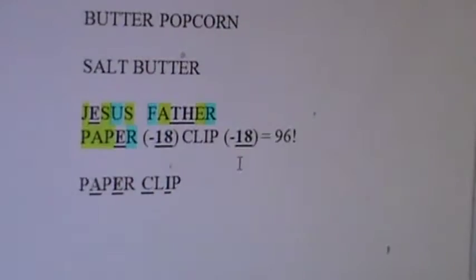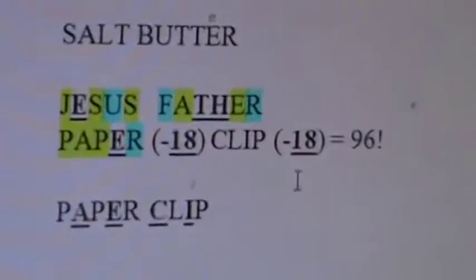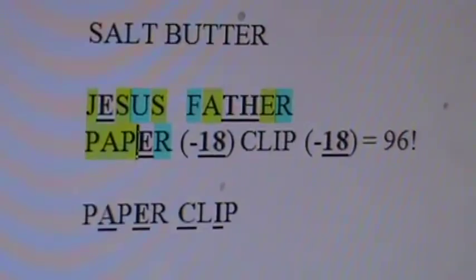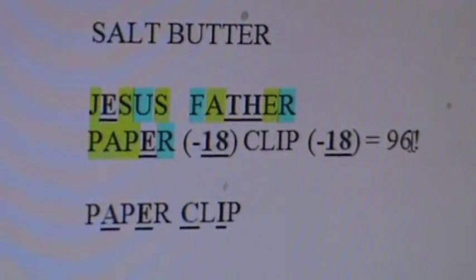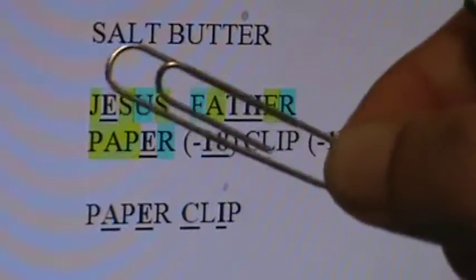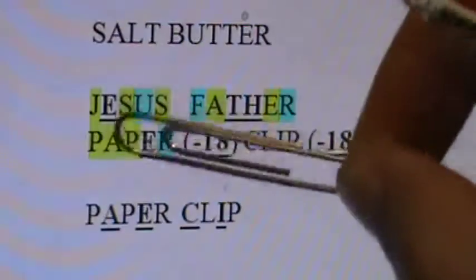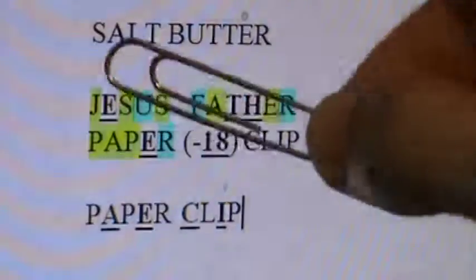But when you put the two together, it's even more obvious because paper is exactly minus 18 from Jesus and clip is exactly minus 18 from Father. So it's a very perfect, obvious pair. And that just came to me as I was in fact looking at a paperclip. And so here it is. The great paperclip in the sovereignty of God is mathematically perfectly called what it is to glorify Jesus and Father.